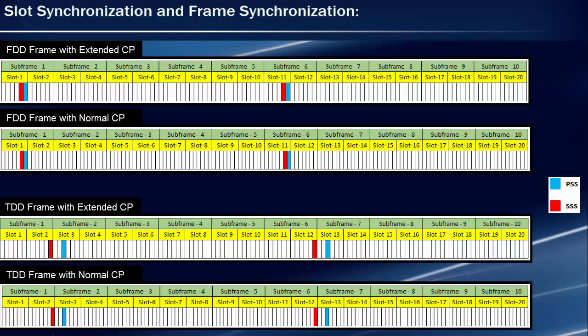Here is the frame structure of the TDD system for both normal and extended cyclic prefixes. It shows the symbols in which PSS and SSS are transmitted over the air interface. PSS is transmitted in the third symbol of the third and 13th slots of the radio frame, and SSS is transmitted three symbols earlier than PSS. Since the same PSS is transmitted in both slots, UE cannot detect the frame boundary using only PSS. The two SSS transmissions in a radio frame change in a specific order to enable UE to detect the frame boundary. So we can conclude that PSS is used for slot synchronization and SSS is used for frame synchronization.